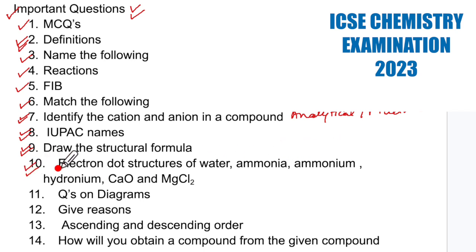Electron dot structure is again maybe it will come for two marks maximum. But again these are handy two marks. Remember this is very important and this is very important. Ammonium ion can come for two marks. Hydronium ion can come for two marks.